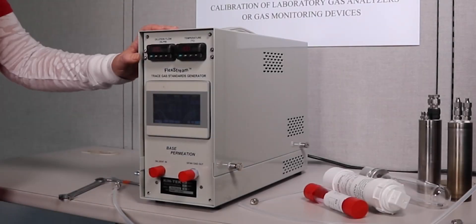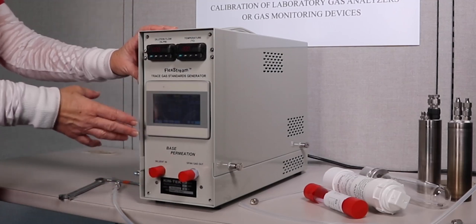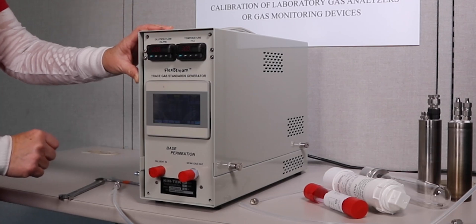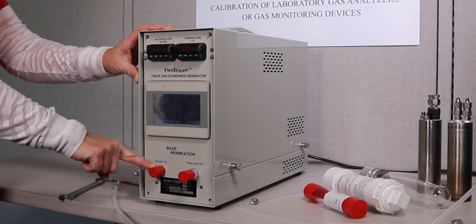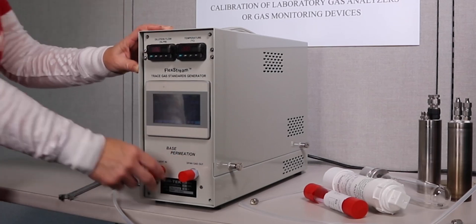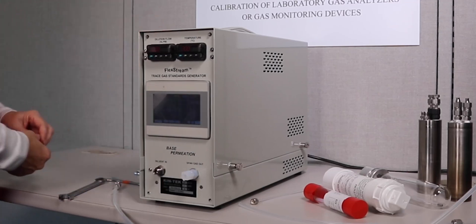Here we have a FlexStream base module that was recently unpacked. It still has red caps on it. This particular unit has already been powered up, but we're going to go ahead and connect our dilution gas with our diluent gas in port and then our span gas outline. So what we want to do is first remove these red caps. That's how it gets packaged and shipped.